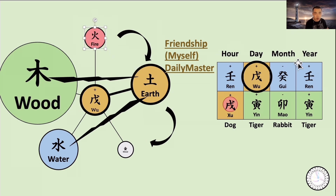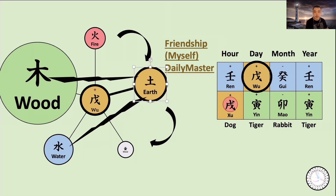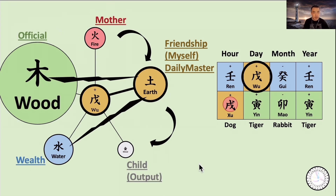There are three water on the heavenly stem, but without the earthly branches, water only on the heavenly stem doesn't have that much power. So I'll draw it maybe larger than fire but smaller than wood. And Earth — I'll draw Earth a little bit smaller, similar to water. Those are the 10 spirits. So it's definitely a wood dominant chart, with Woo Earth as the central element, as the Daily Master, and as the Friendship Spirit.